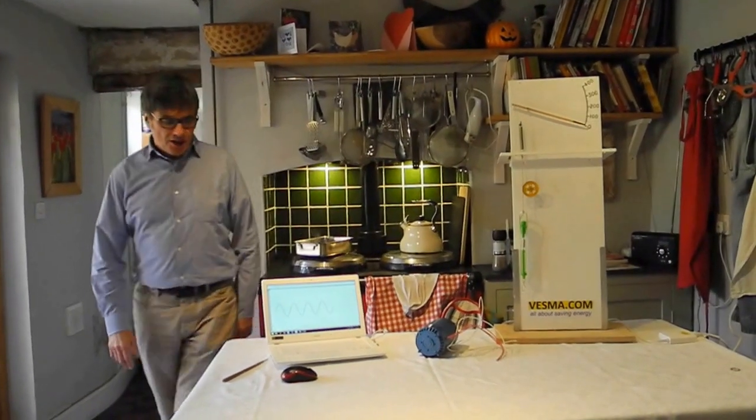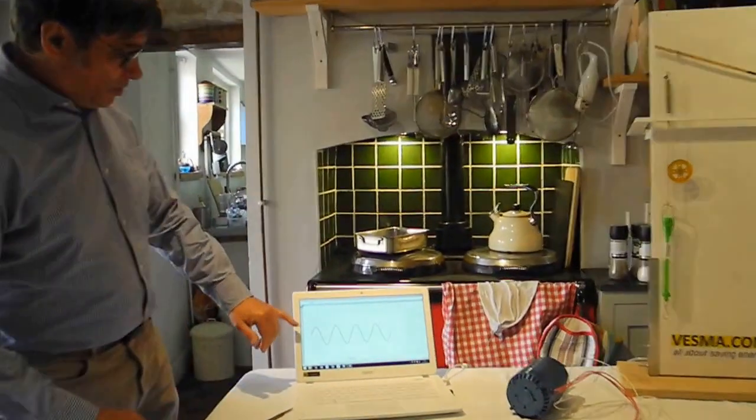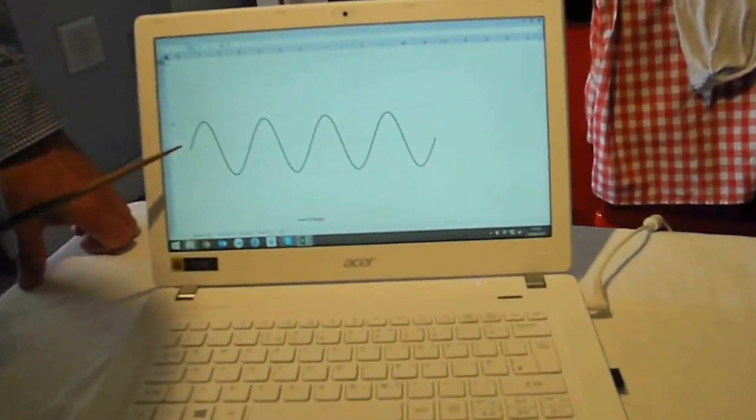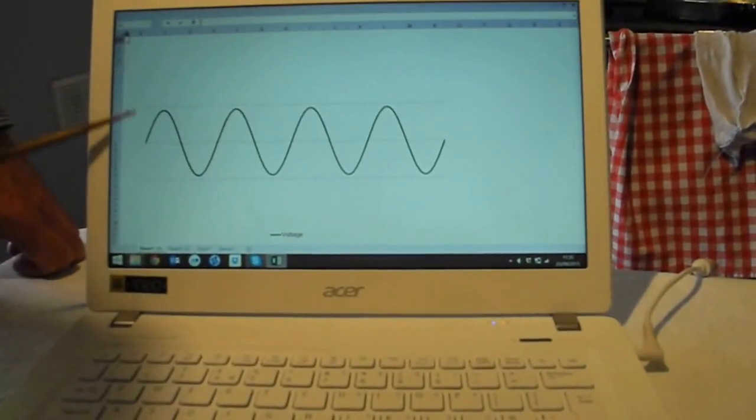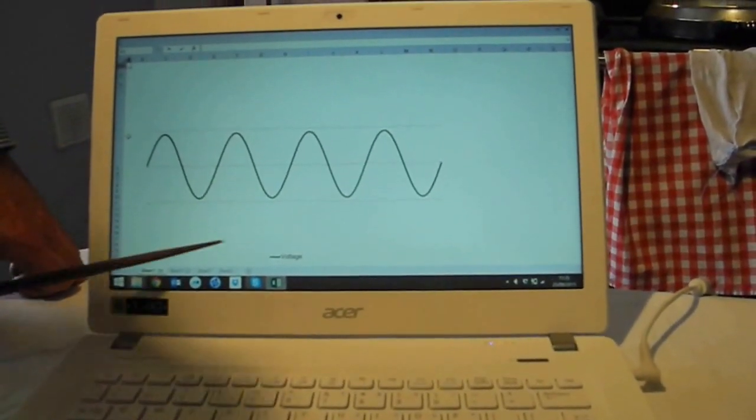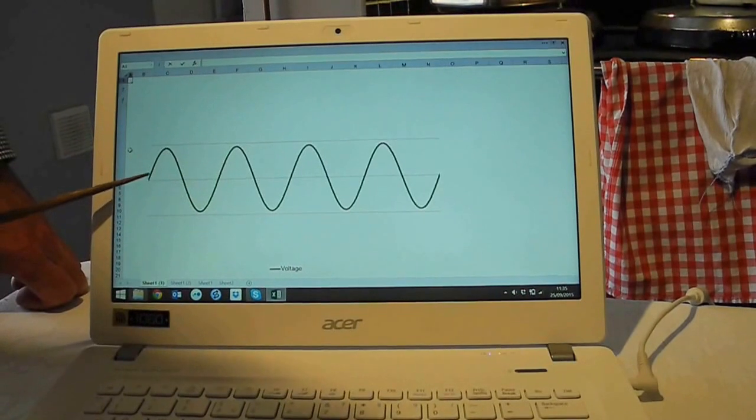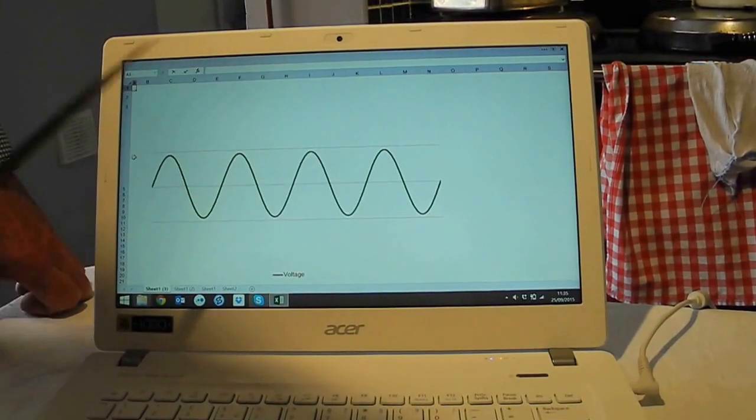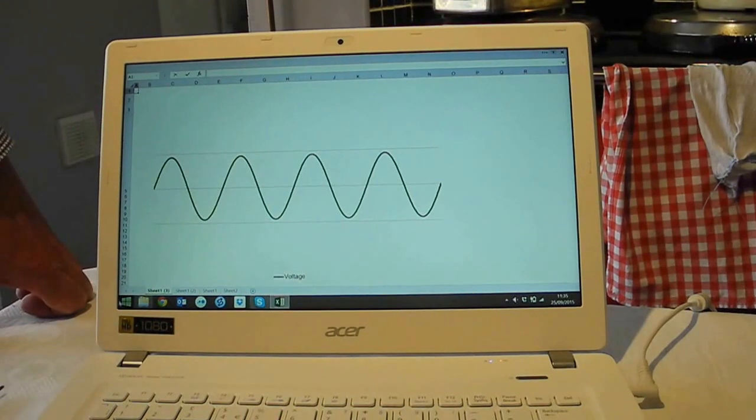I'll start by looking at what everybody I hope will recognize, a common representation of electrical voltage. Voltage on the vertical axis, time on the horizontal axis, and the classic 50 cycles per second sinusoidal waveform. That's the voltage.